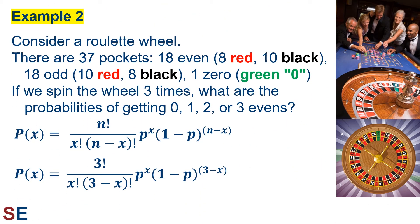Let's look at another example: consider the game of roulette. There's a wheel that spins and a metal ball that bounces around until it lands in one of the pockets. In Europe, where roulette is very popular, there are 37 pockets: 18 have even numbers (8 red, 10 black), 18 have odd numbers (10 red, 8 black), and a 0 which is green and considered neither odd nor even. The simplest bet is on one of the two colors or on odd/even, and if you win, you double your money. Let's think about spinning the wheel 3 times and the probabilities of the ball landing in an even pocket 0, 1, 2, or 3 times.